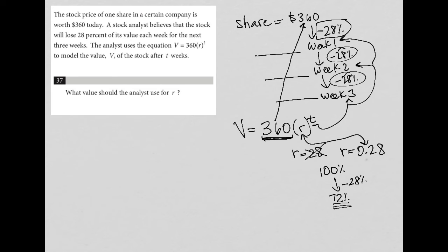So if I were to try to find out how much money would I expect to have in week one, and this is where maybe doing this would be useful, I'd say 360 times 0.72, right? Not times 0.28. So 360 times 0.72, I would expect to have $259.20.